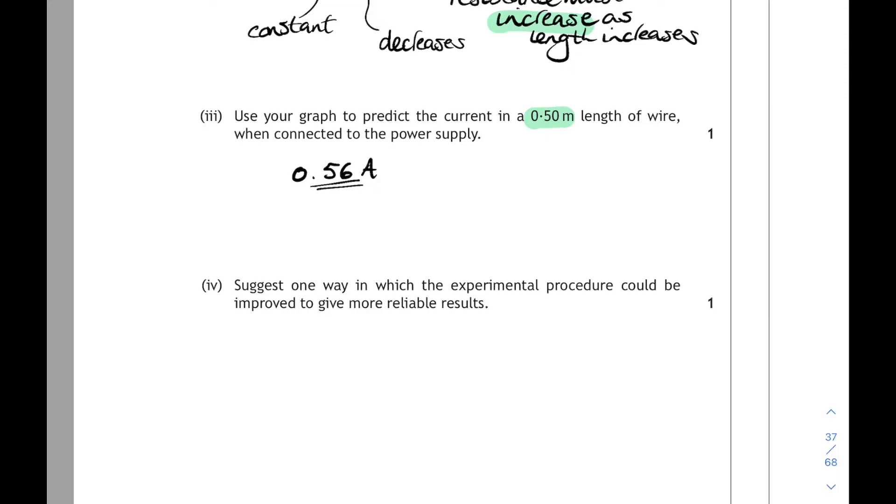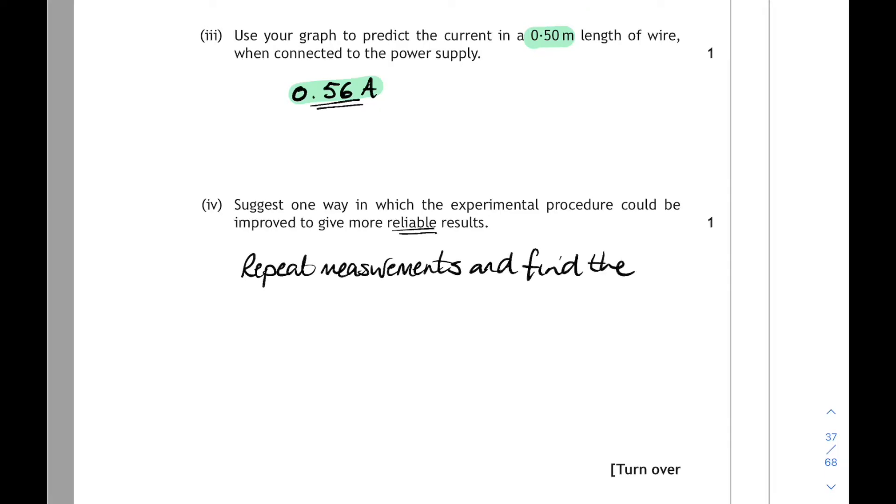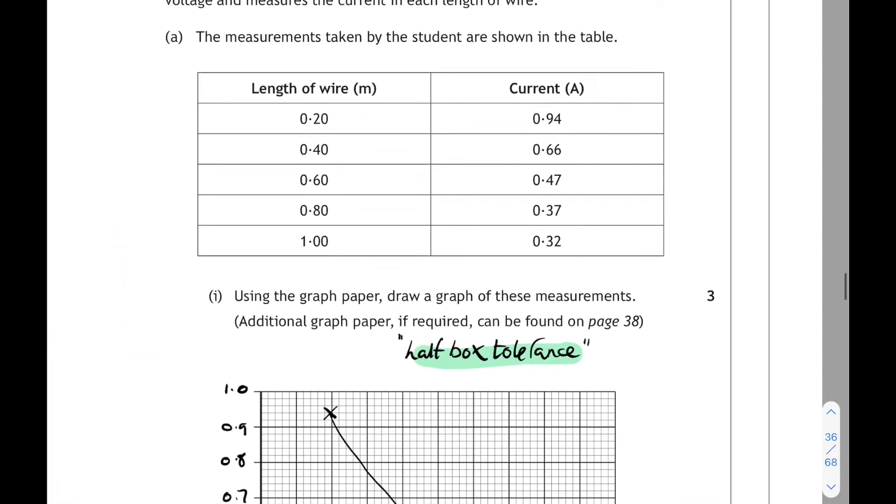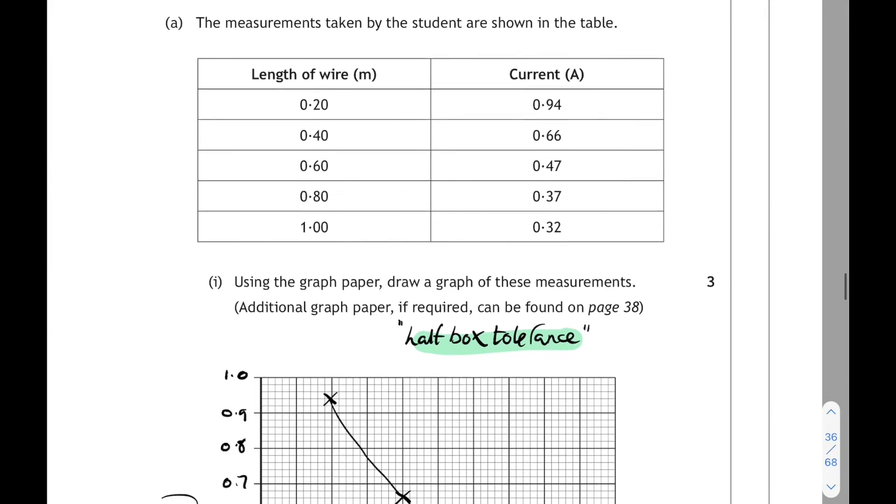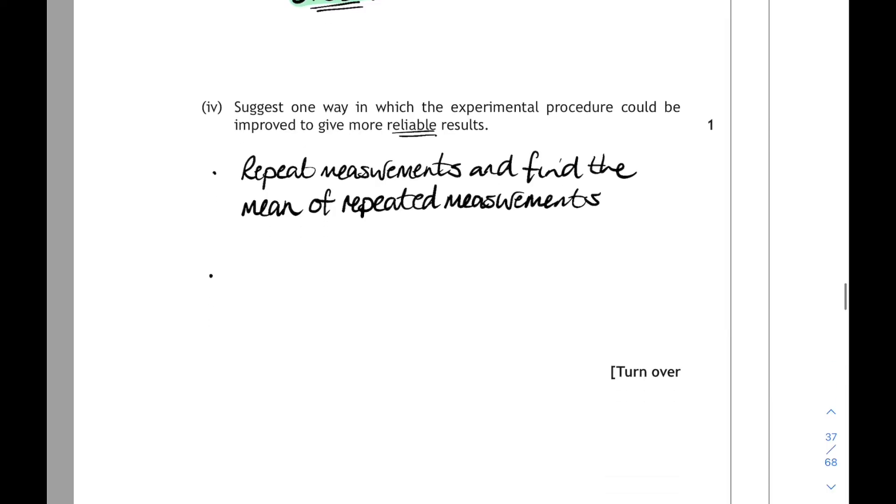Then suggest one way in which the experimental procedure could be improved to give more reliable results. Well, you want to repeat your measurements and find the mean of those repeated measurements to make them more reliable. You could also, if we have a look at the table, they've only taken lengths every 20 centimeters there.